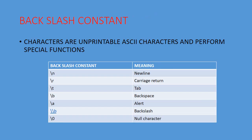Another type is the backslash constant — these are unprintable ASCII characters that perform special functions. For example: backslash n for new line, backslash r for carriage return, backslash t for tab or space, backslash b for backspace, backslash a for alert, backslash backslash for a literal backslash, and backslash 0 for the null character. The two most important ones are backslash n and backslash t.